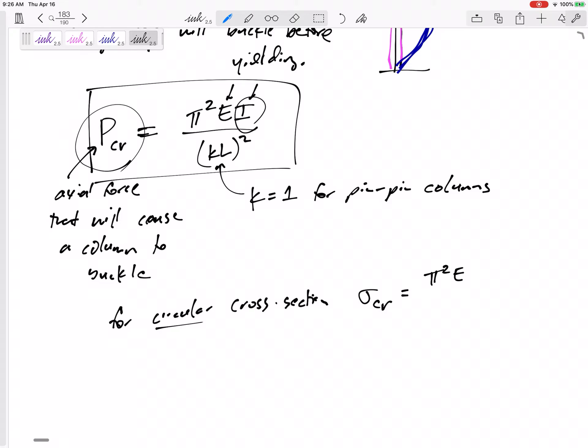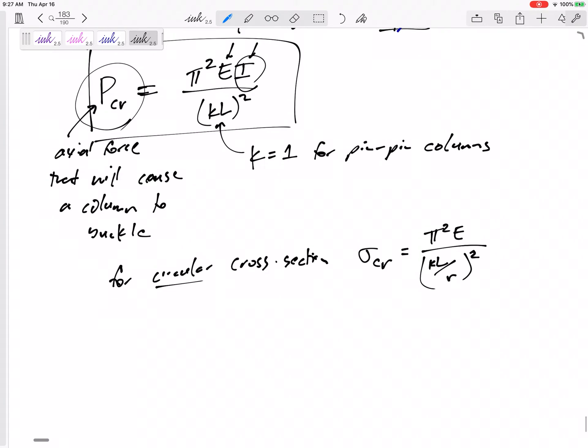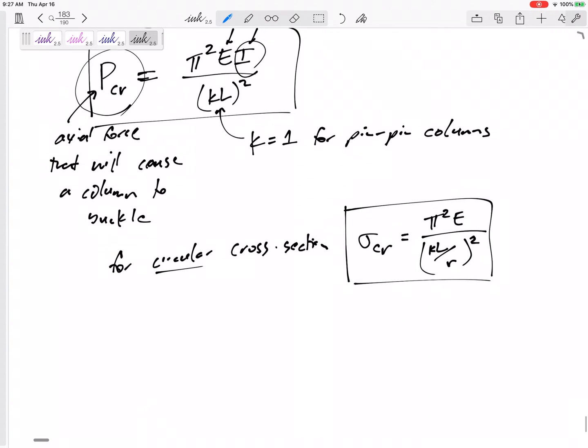Critical stress, here we go. Critical stress, pi squared E over L over radius squared, KL over radius squared.